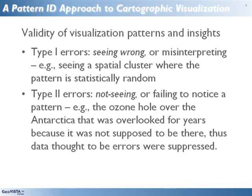In relation to the potential for misinterpretation errors, John Ganter and I introduced the idea of Type 1 and Type 2 visualization errors. The first, 'seeing wrong,' can be defined as misinterpreting a pattern or seeing one that does not exist. Type 2, or 'not seeing,' can be defined as failing to notice a pattern that is there. These categories have obvious and intended parallels to the better known Type 1 and Type 2 errors in statistical analysis.